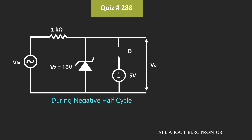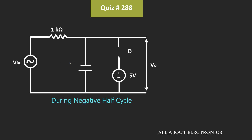This Zener diode will get forward biased when the voltage across it is greater than 0.7V. That means whenever the input voltage is between minus 0.7V to 0V, Vout is equal to Vin, because at that time this Zener diode will also act as an open circuit. But once the input voltage goes below minus 0.7V, the Zener diode will get forward biased, and in that condition the voltage across the Zener diode will be equal to 0.7V, so Vout will be equal to minus 0.7V.